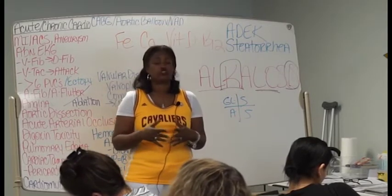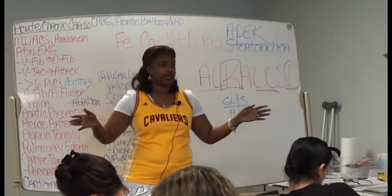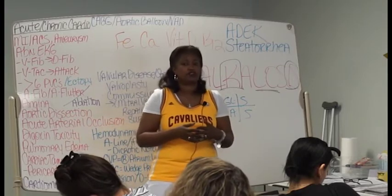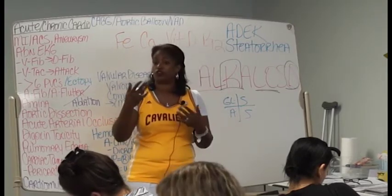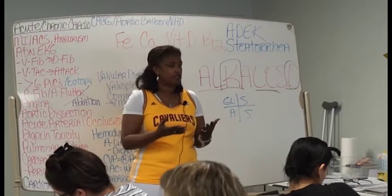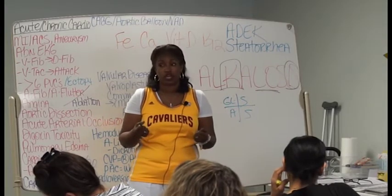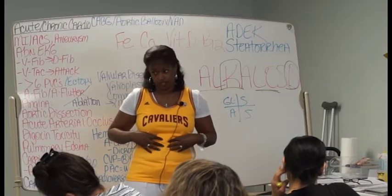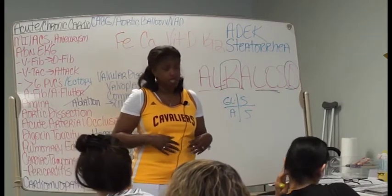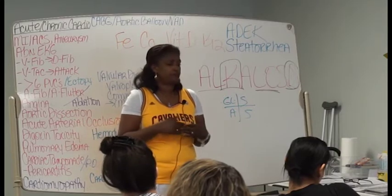Patients who are shunting blood away from the arms and legs and to the brain and the heart can also get a paralytic ileus. So that would be your shock patients. You don't need blood in the digestive system when you're in shock. We shut the blood away on purpose. So it's a paralytic ileus.